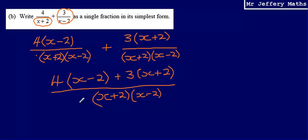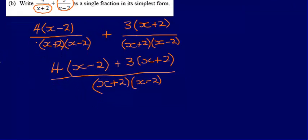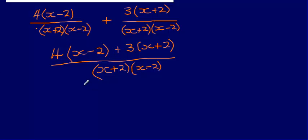So this bit on the top is going to give me 4x - 8. I'm just going to write it over here: 4x - 8, and that part there plus 3 times x, so plus 3x + 6.